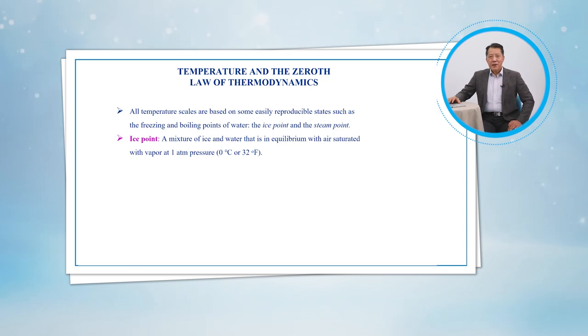These are also called the ice point and the steam point respectively. A mixture of ice and water that is in equilibrium with air saturated with vapor at 1 atm pressure is said to be at the ice point. A mixture of liquid water and water vapor in equilibrium at 1 atm pressure is said to be at the steam point.